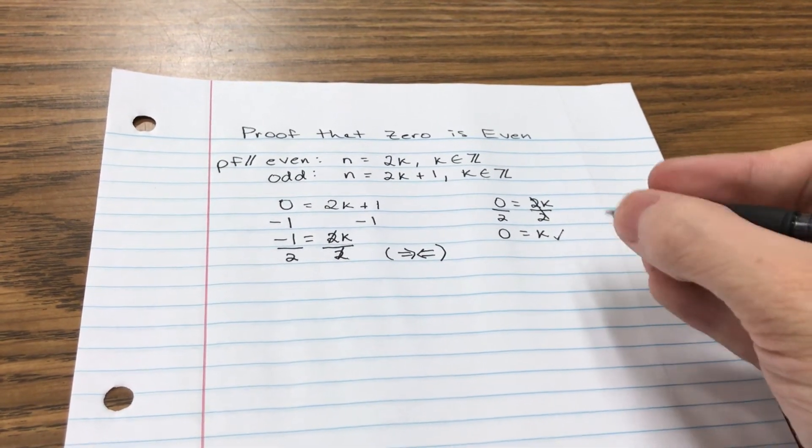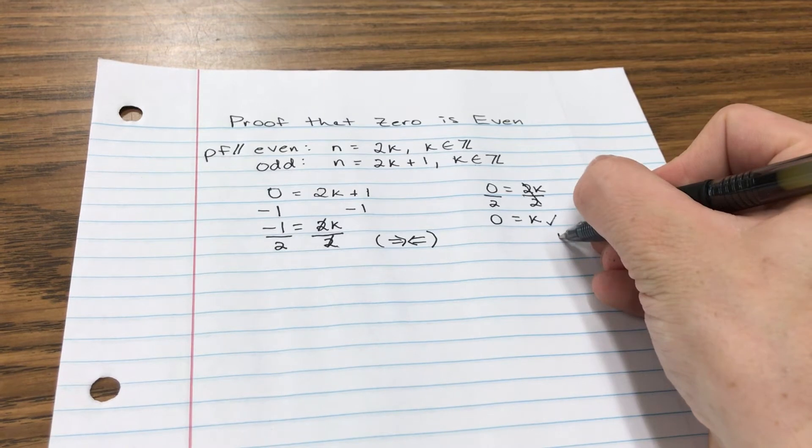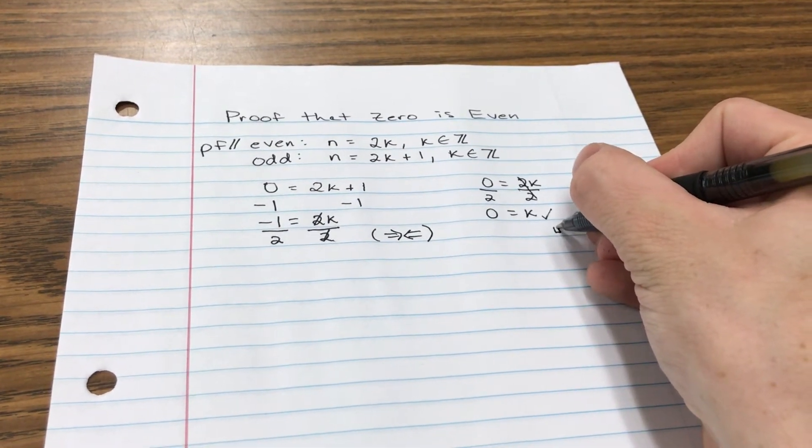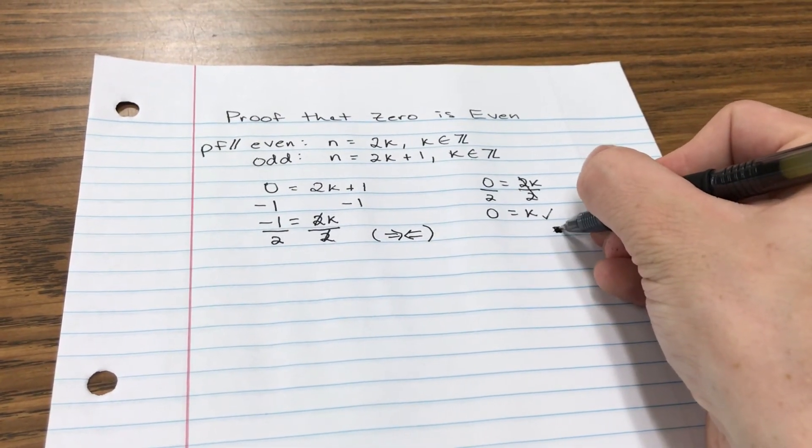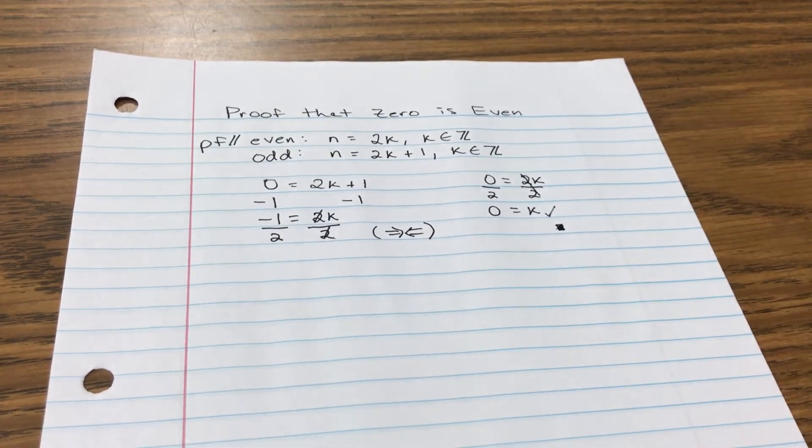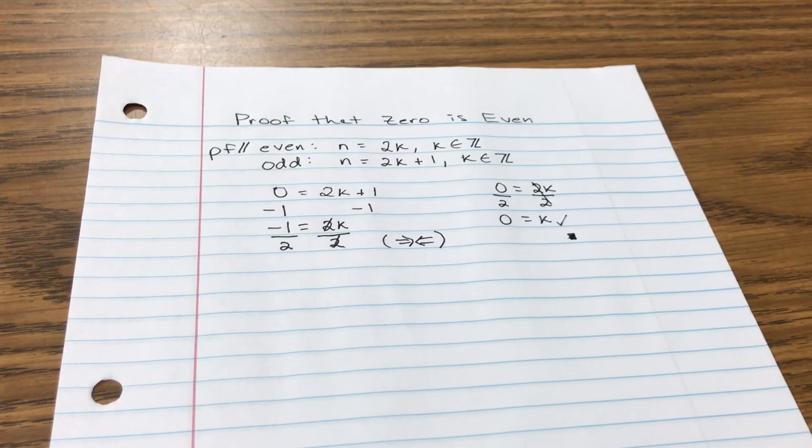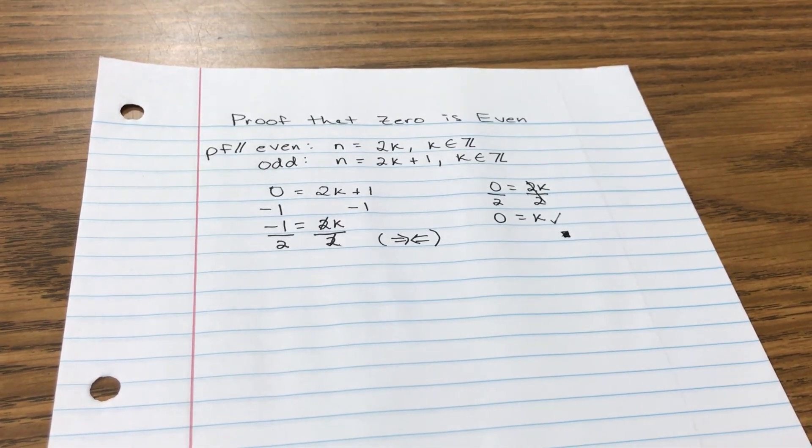Therefore, 0 must be an even integer. And when I'm done with my proof, I put a little box that I fill in to show that the proof is over. All right, that's it.